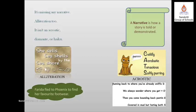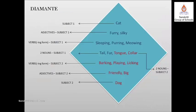A diamante poem does not rhyme and has seven lines. The first and last lines are the shortest — one word each — while the lines in the middle are longer, making it look like a diamond. Can you see the diagram? We may take the same subjects or opposite subjects. Here we have taken opposite subjects — cat and dog. The second line describes a cat using adjectives, the third line has verbs for cat, the fourth line has two nouns related to cat and two for dog, and we go on using the same pattern.